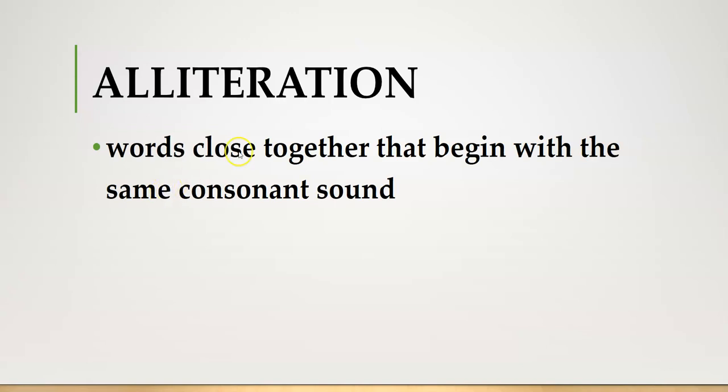And then, alliteration. It's when words close together begin with the same sound. But, it must be a consonant sound. It can't be a vowel sound. And, I think it's confusing because alliteration starts with a vowel. A lot of times students think angry apple is alliteration. It's not. That is something else. We call that assonance. That's vowel sounds in words. Alliteration are consonant sounds.